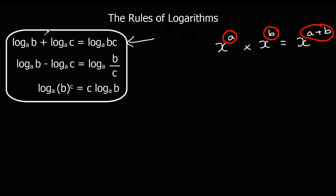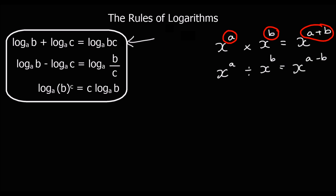If you add two logs together, that means you multiply the answers. So log base a of b plus log base a of c equals log base a of bc. The base stays the same, and the two answer values (b and c) are multiplied together.